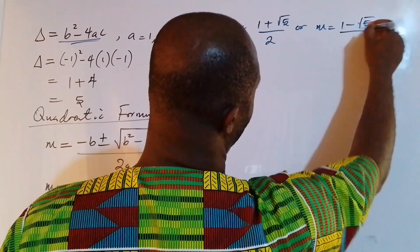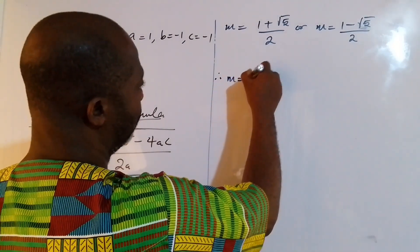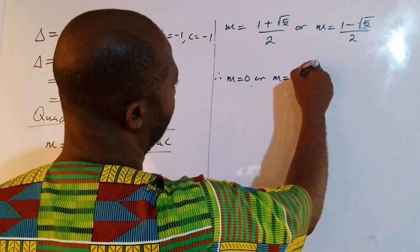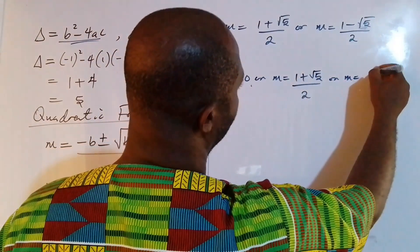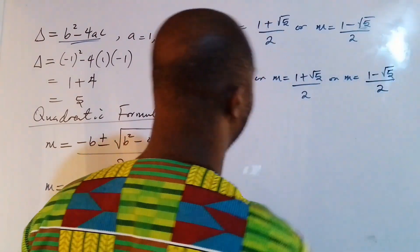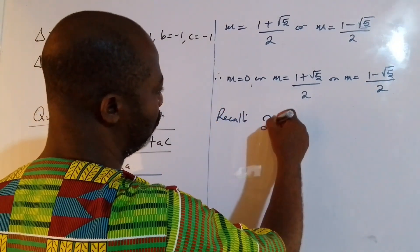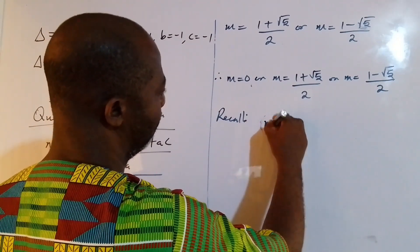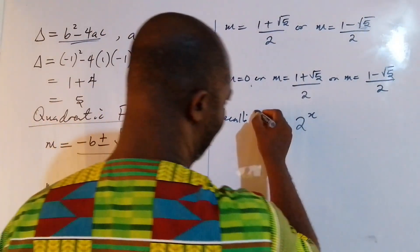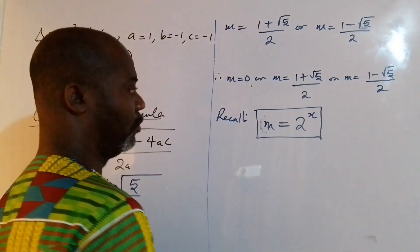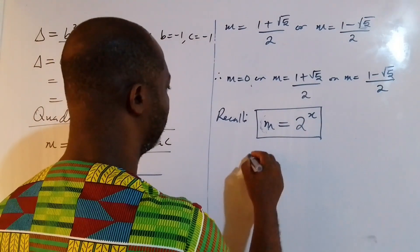So there are three solutions for m in total. We have m equal to 0, or m equal to 1 plus root 5 over 2, or m equal to 1 minus root 5 over 2. But we should not forget that m represents 2 to the power of x, and for this equation to be valid, 2 to the power of x must be greater than 0.